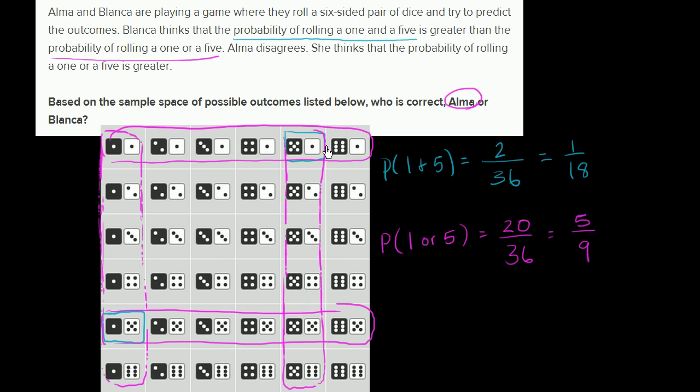So just even without looking at this, without actually even having to calculate these probabilities, you could have said, look, what Alma is saying has a higher probability. It makes sense because she's placing a much looser constraint, a one or a five, not one and a five.